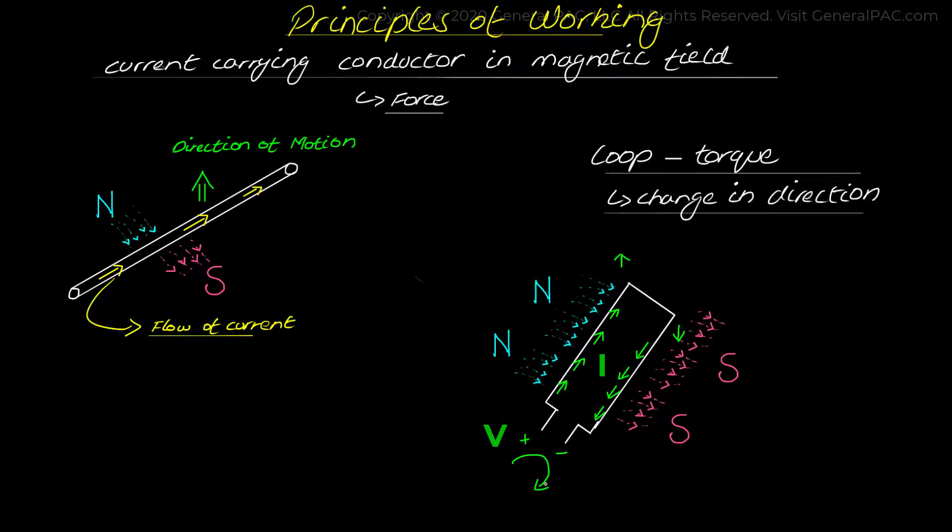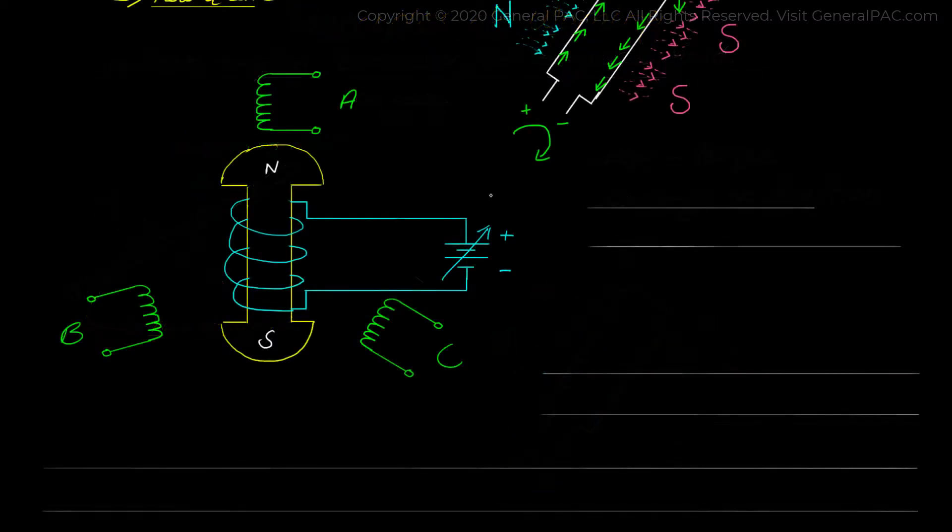That is, a conductor moving in a constant magnetic field would experience an induced voltage. Now, after having a brief idea on motional EMF, let's move on to discussing how motors work using these concepts.